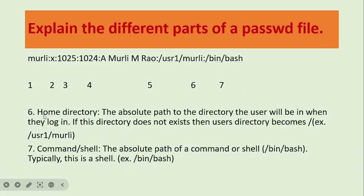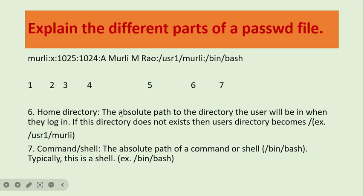Next is number 6: Home Directory. The home directory for user 'Moodley' uses an absolute path, which is /usr1/Moodley. The absolute path to the directory is where the user will be placed upon login. If this directory does not exist, then the user directory becomes the root directory automatically.